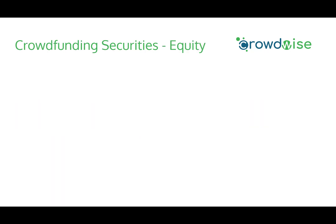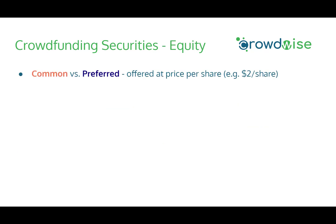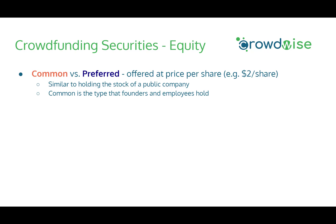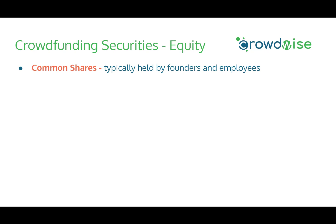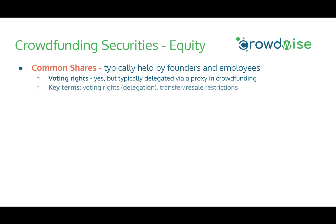Let's get into each crowdfunding security in more detail, starting with common and preferred equity. Common versus preferred shares are offered at a price per share — for example, $2 per share. This is similar to holding stock of a public company in that you own actual equity with all the potential future gains or losses. Common shares are the type founders and employees typically hold, while preferred are more common for outside investors. Because crowdfunding investors are minority shareholders, voting rights on common shares are typically delegated to a proxy such as the CEO.